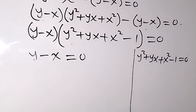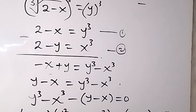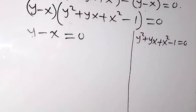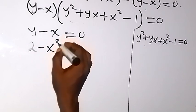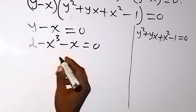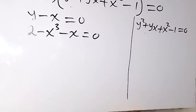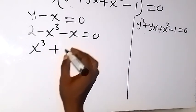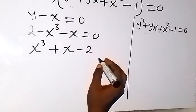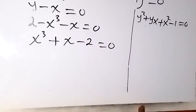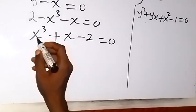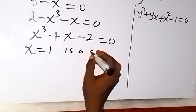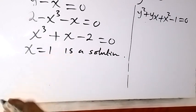We know that y equals 2 minus x cubed. Substituting y equals x into that and rearranging gives us x cubed plus x minus 2 equals zero. When we substitute x equals 1 into this polynomial, we get zero, so x equals 1 is a solution, and therefore x minus 1 is a factor.